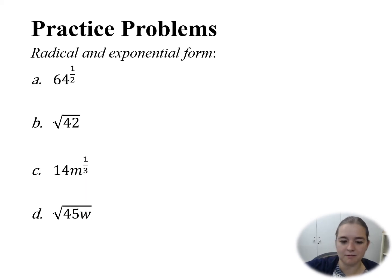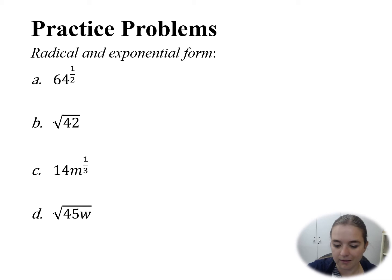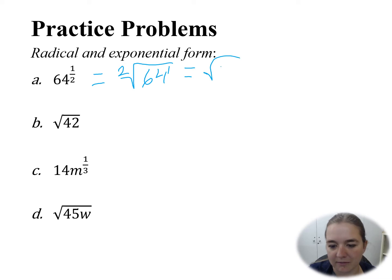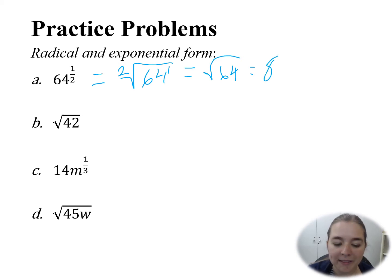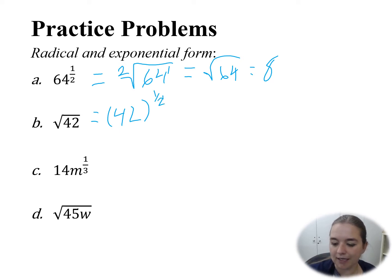Let's practice. These first couple of problems involve transforming expressions from radical to exponential form or the other direction. If I have 64 to the power of 1 half, that tells me I'm taking the second root of 64 to the power of 1 — in simpler form, the square root of 64, because that 2 and that 1 are implied. The square root of 64 is 8. Going the other direction, if I have the square root of 42, that tells me 42 to the power of 1 half. I can type this into a calculator to get an estimated answer, but right now I'm just practicing transferring forms.